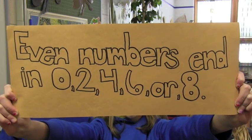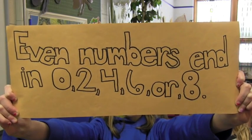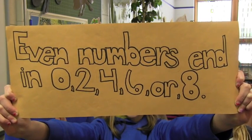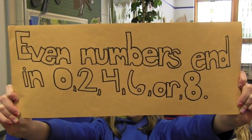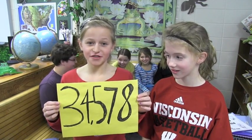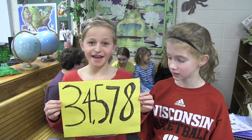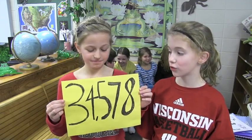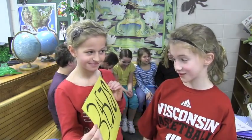A number is divisible by two if it's even. What about 34,578? Well, eight is an even number, so 34,578 is divisible by two.